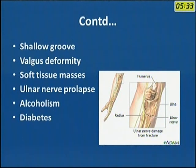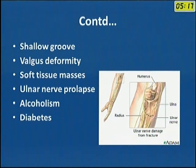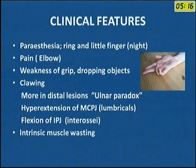Some precipitating factors include a shallow groove, valgus deformity, what is called late or tardy ulnar nerve palsy, soft-tissue masses around the medial epicondyle, ulnar nerve prolapse, alcoholism, and diabetes mellitus. These are additional conditions associated with ulnar nerve palsy.